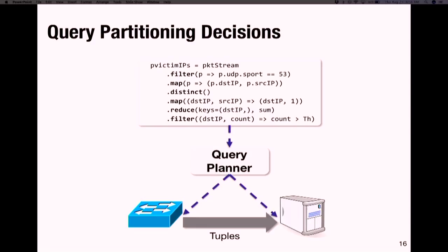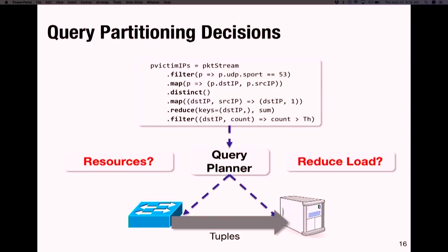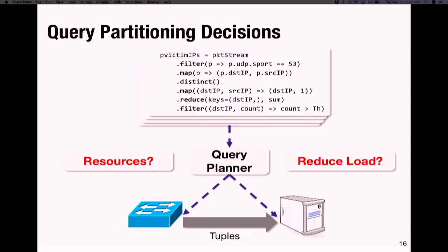For each decision, the query planner needs to answer two basic questions: whether the switch has sufficient resources to execute the partitioned query, and whether the partitioning decision reduces the workload — the number of tuples sent to the stream processor. This seems straightforward with one query, but in practice there will be many queries sharing data plane resources, making the partitioning decisions much more complex. We modeled this query partitioning problem as an Integer Linear Program (ILP).